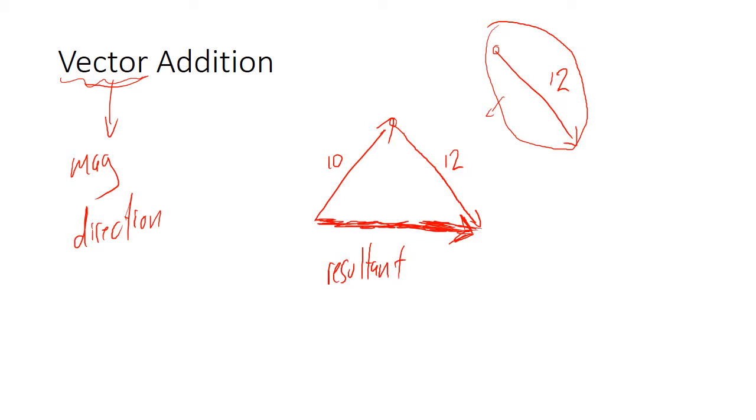The resultant vector is the answer vector. So the resultant is when you put two together, or three, or ten, or whatever it is. So that's one way to do vector addition.